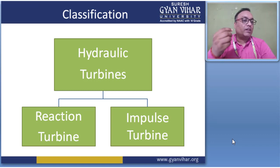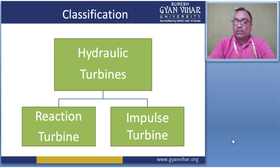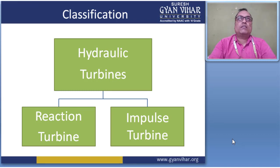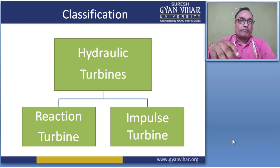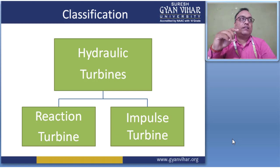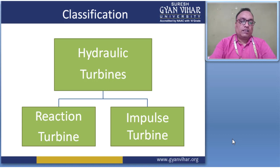Hydraulic turbines may be divided into different types — some are high pressure, some low pressure. Some turbines are high head turbines, some medium head, and some low head turbines, depending on the range of the dam. Some are very high head turbines situated in Russia and China, which will be discussed briefly in this chapter.